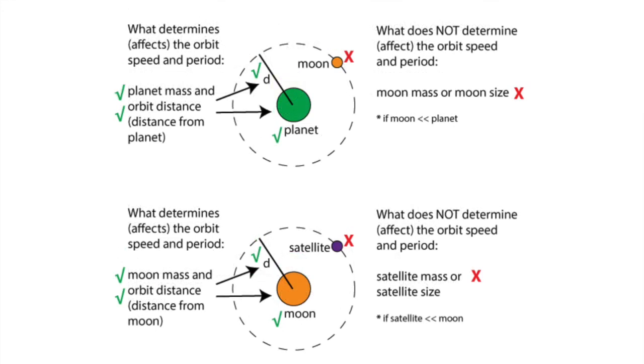Now if the two objects have comparable masses, then each of them would have noticeable orbits around a common point called the center of mass. A few slides ago I talked about exoplanets using the wobble of the star, which is the star orbiting the center of mass, but that takes some really sensitive instruments to measure the small wobble of the star.